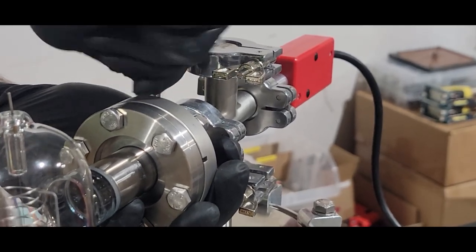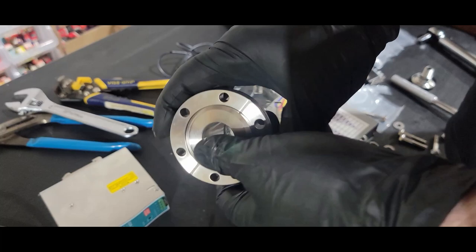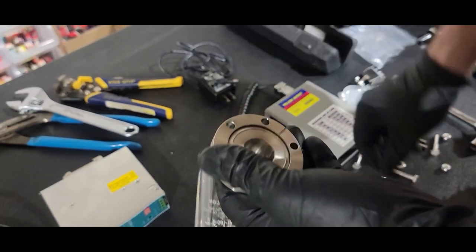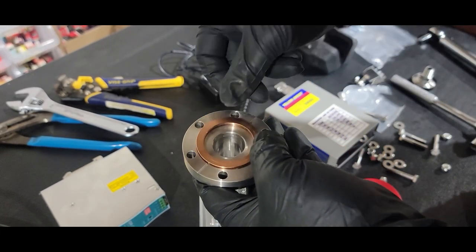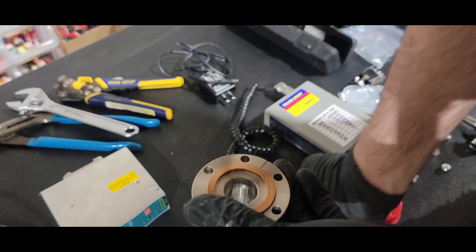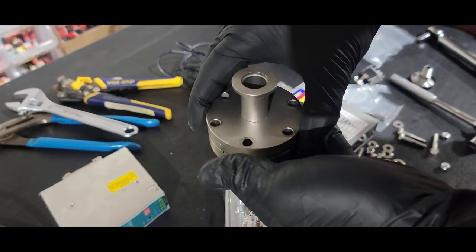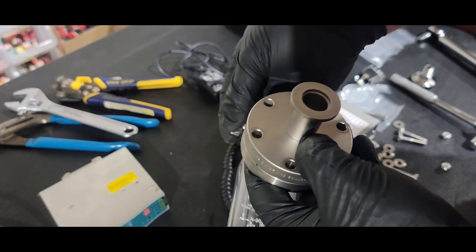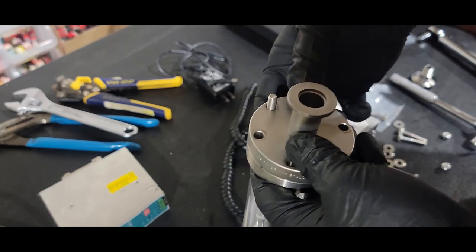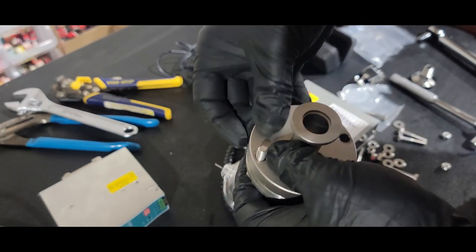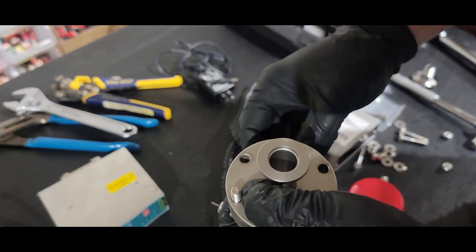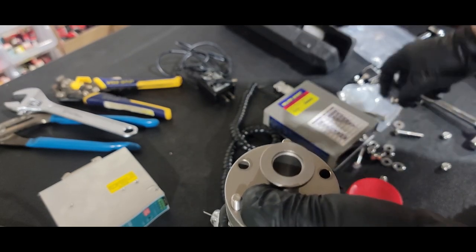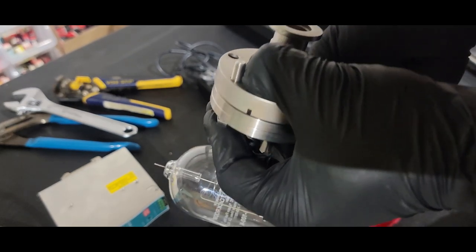The second common type of flange is the Conflat, or CF. CF flanges come in a huge range of sizes and have the advantage of being a completely metal-to-metal vacuum seal. CF fittings are bolted together with an oxygen-free copper gasket in between. Each flange has a knife edge which bites into the copper, creating a vacuum seal that can survive high temperatures and large temperature changes.